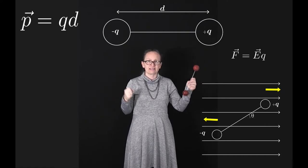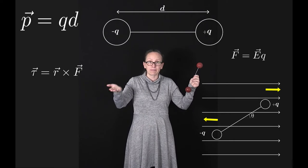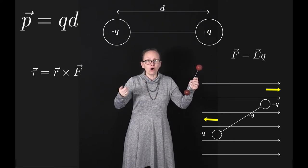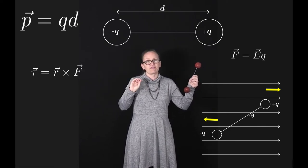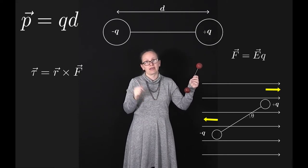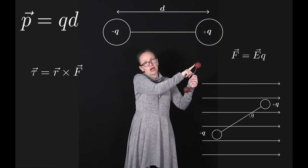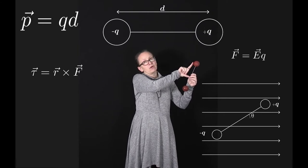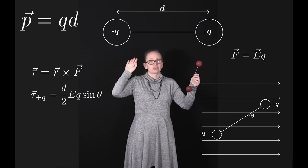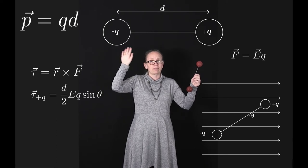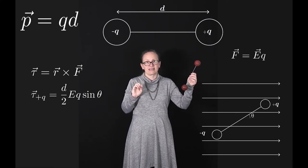However, there is a net torque, because these forces act at different points on the dipole. Torque is given by the vector equation τ = r × F, where r is the vector from the pivot point to where the force is applied. For the torque on the positive charge, the distance from the pivot is d/2, the force magnitude is eQ, so the torque is (d/2)eQ sinθ, where θ is the angle between the bond axis and the electric field.